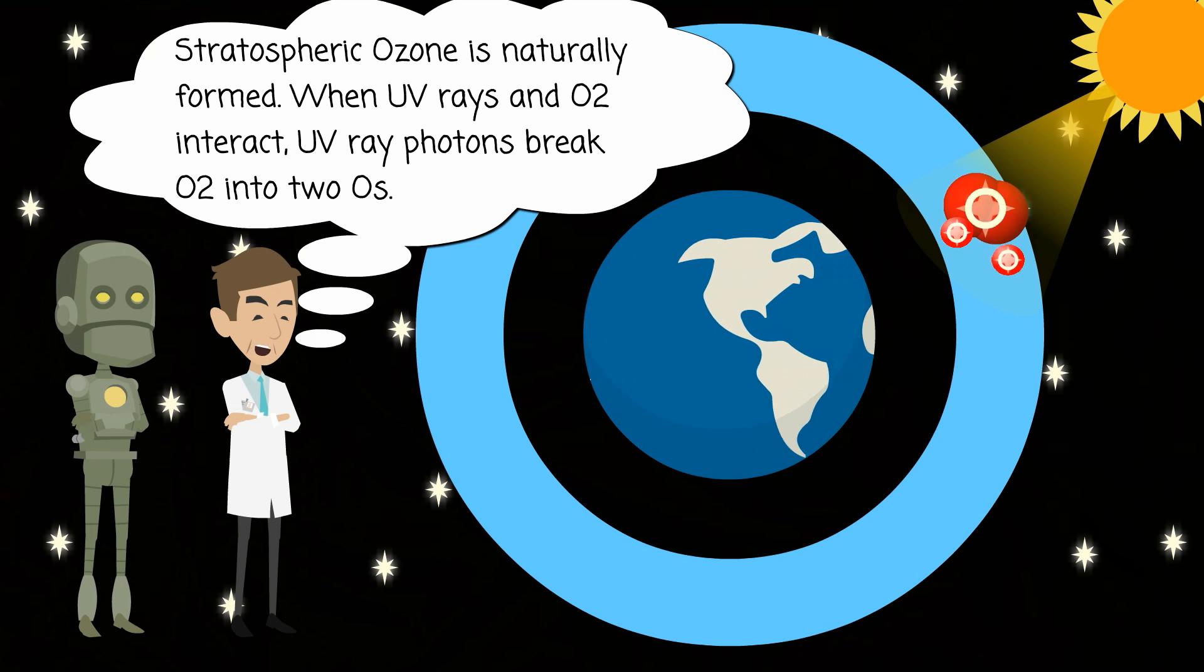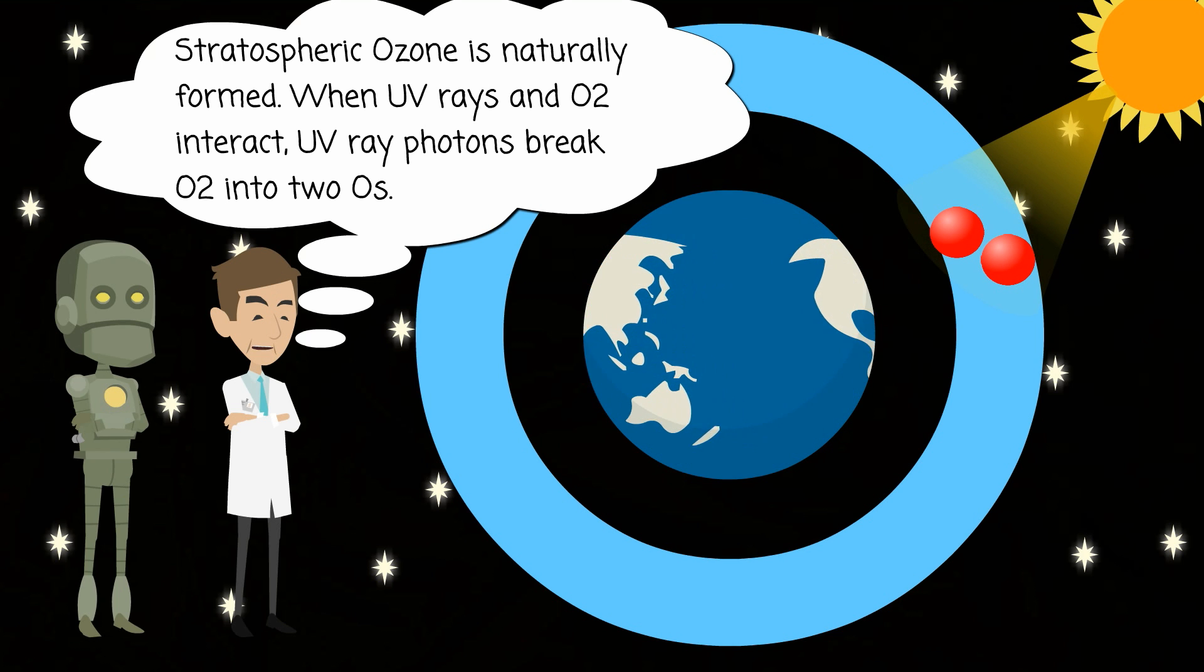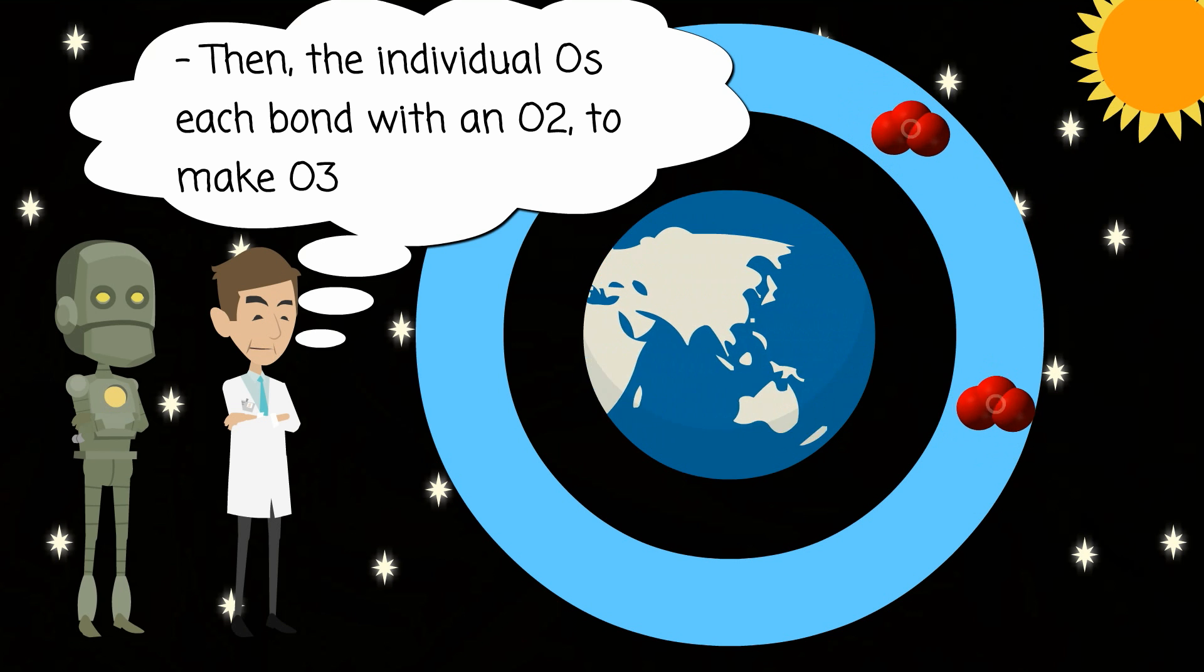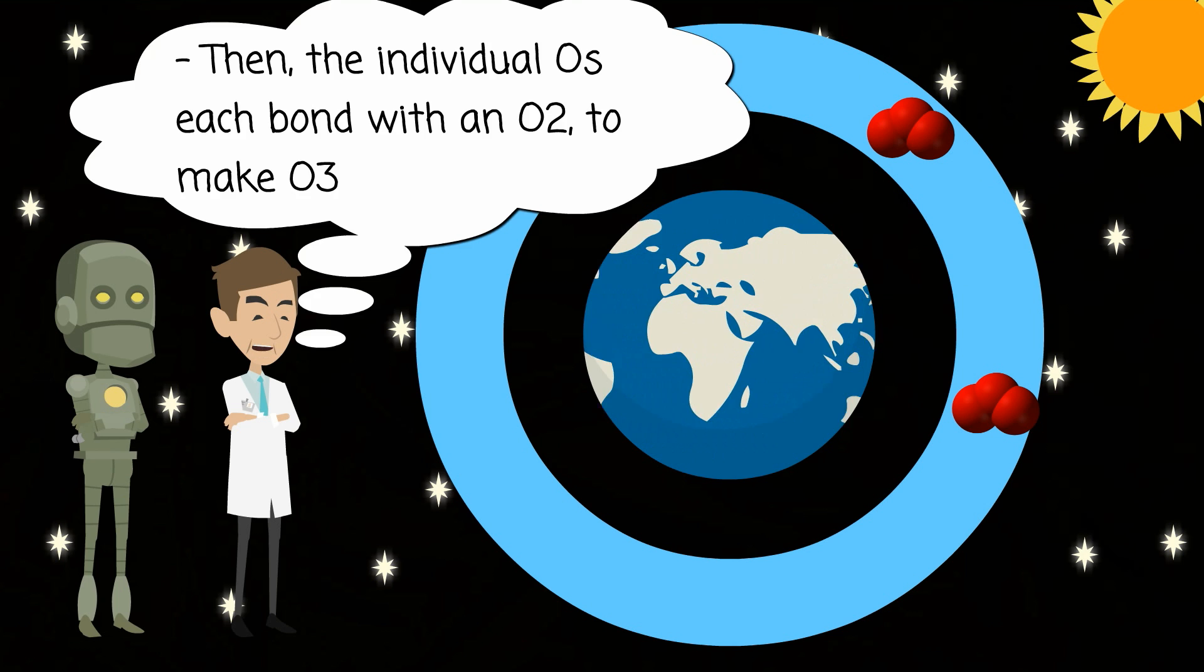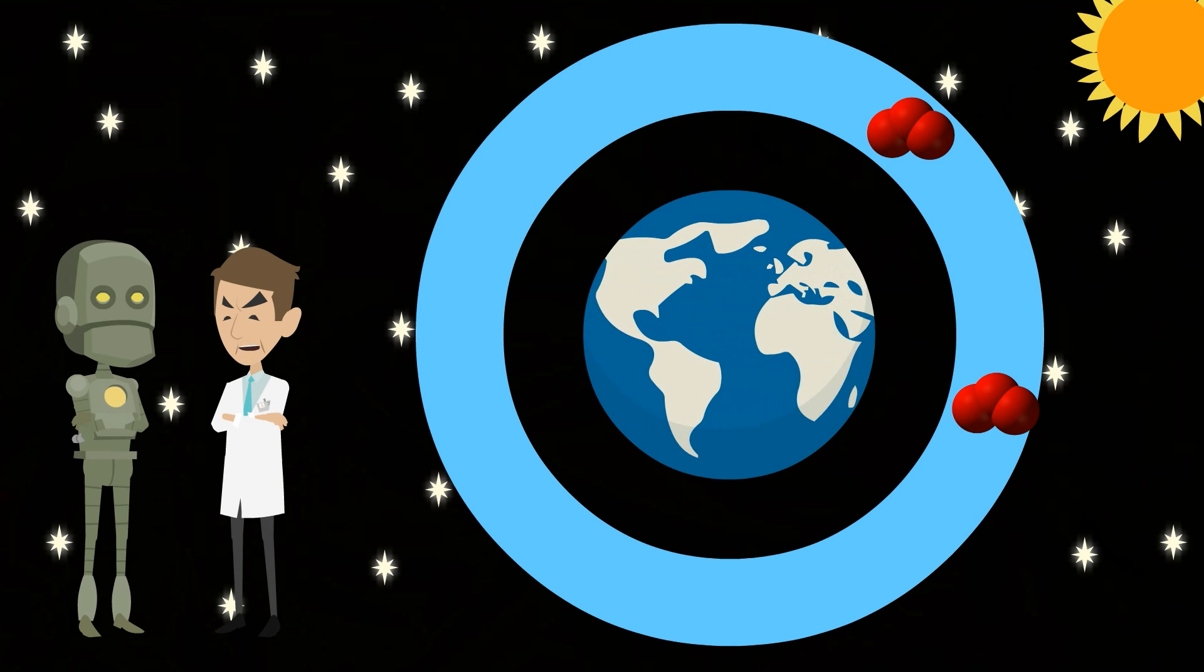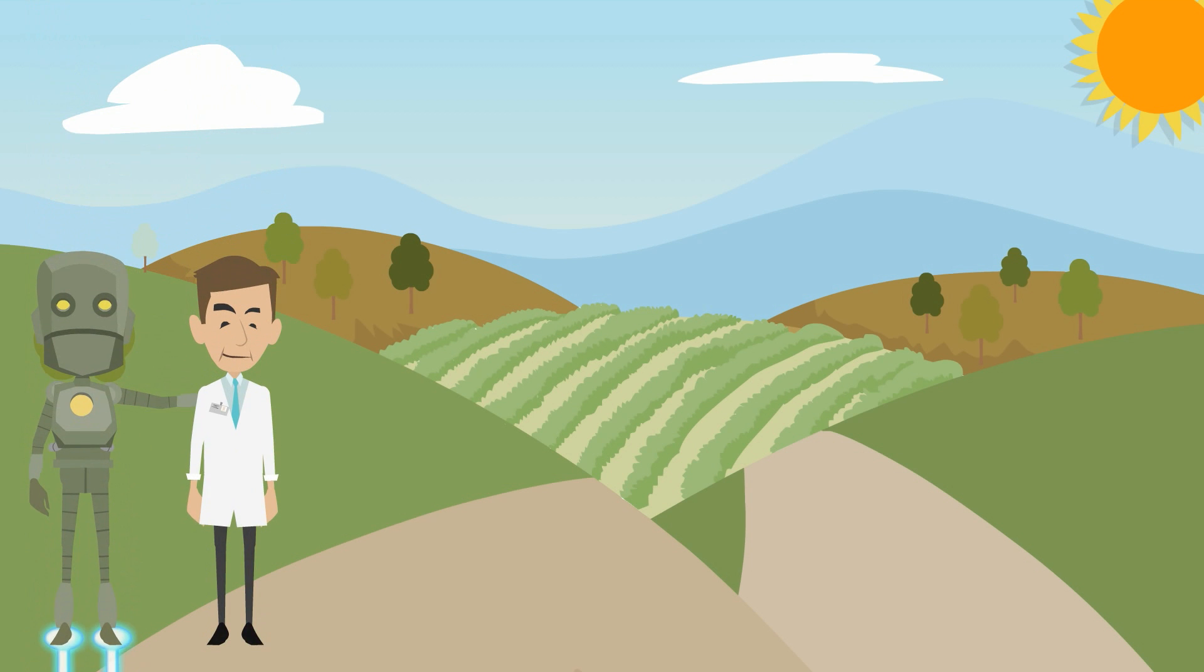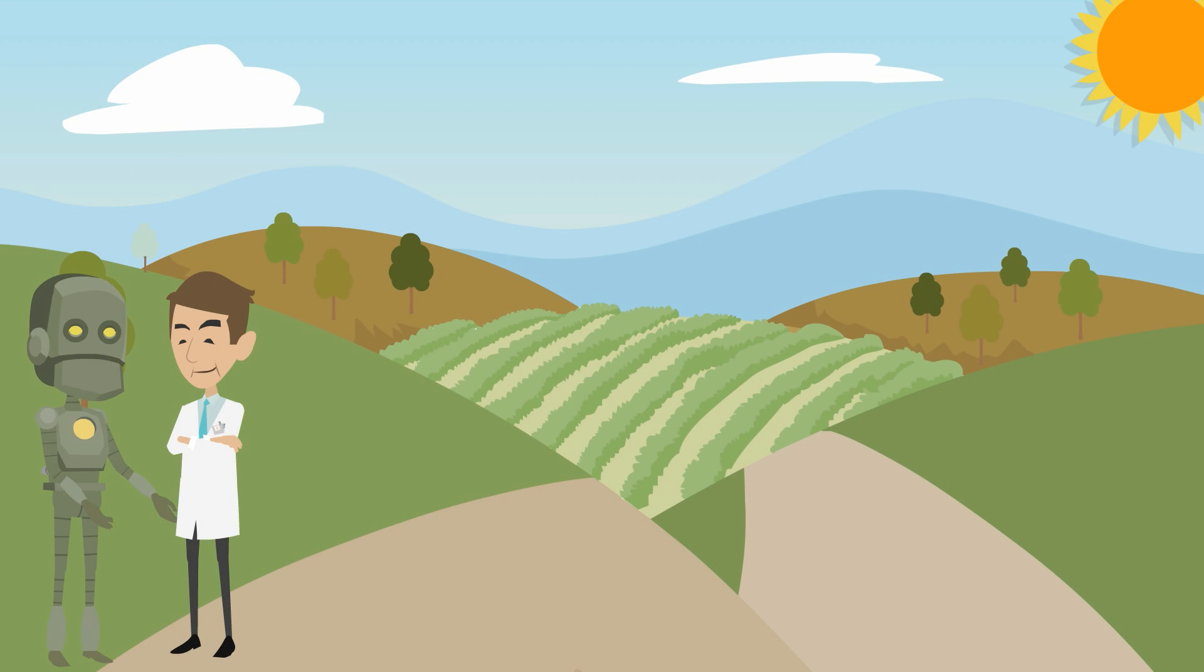The photons from the UV rays break the O2 apart into two separate, single oxygen atoms. Then an individual oxygen atom bonds with an O2 to make O3, or ozone. Now will you please take me back to Earth? Information input computes. Query, why does stratospheric ozone only form in the stratosphere?